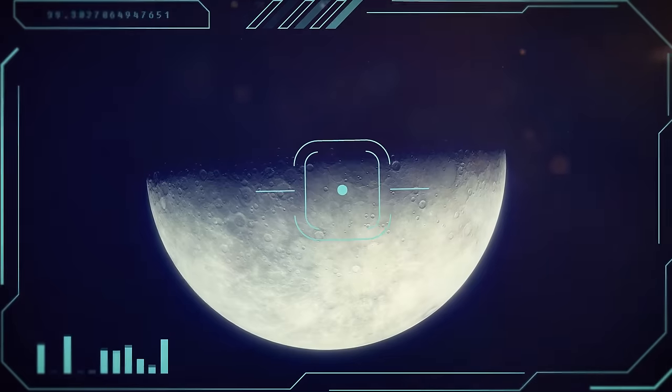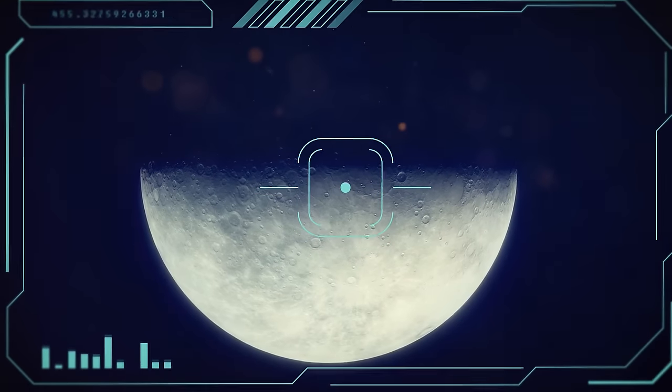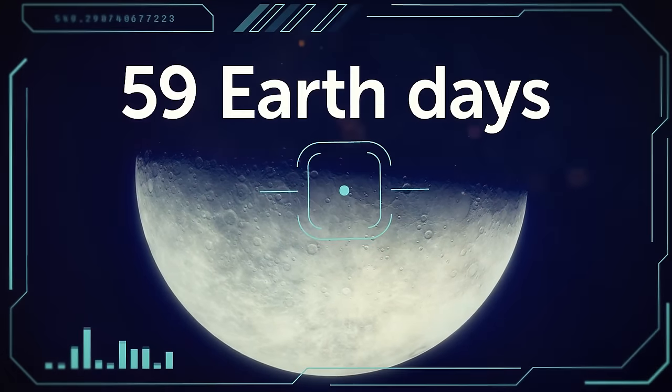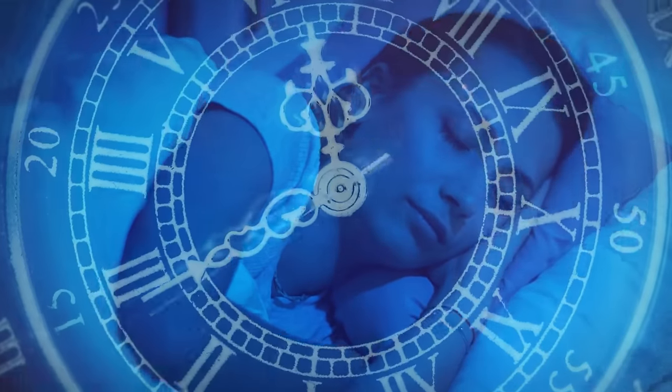At the same time, the planet rotates so slowly that a day on Mercury lasts almost 59 Earth days. A long time to wait to go to bed.